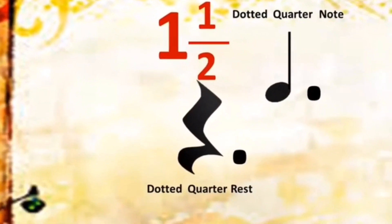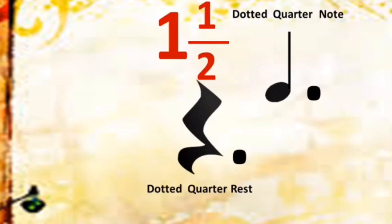These are the musical symbols of a dotted quarter note and dotted quarter rest. Dotted quarter note gets 1 and a half beats of sound while the dotted quarter rest gets 1 and a half beats of silence.